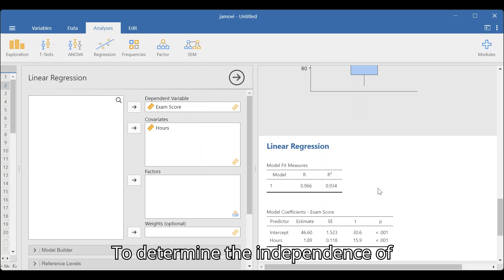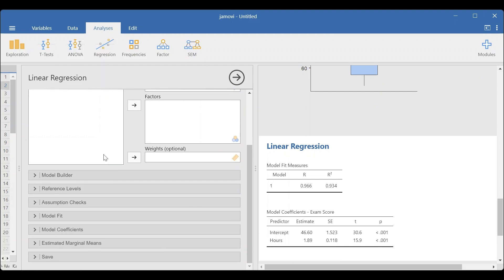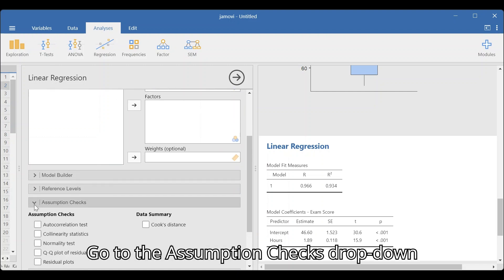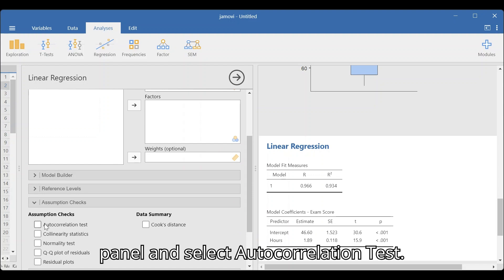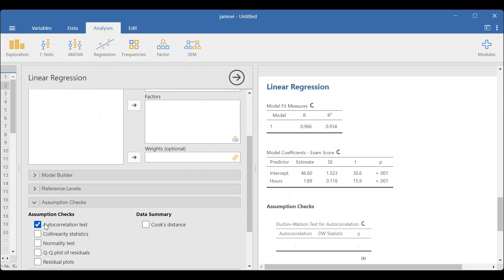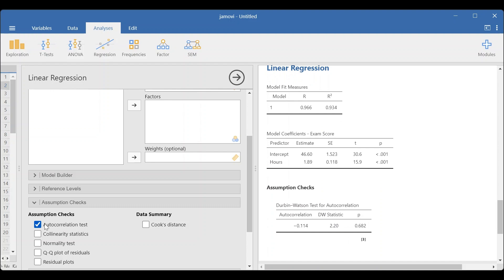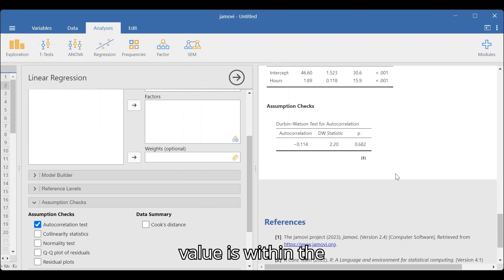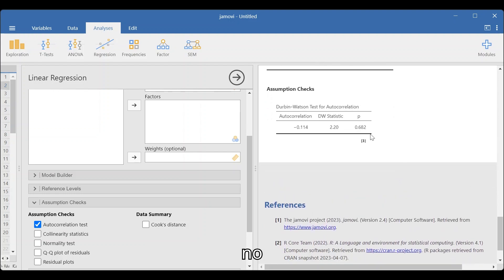To determine the independence of observations, the Durbin-Watson statistics will be used. Go to the Assumption Checks drop-down panel and select Autocorrelation Test. Since the DW value, 2.20, is within the acceptable range, 1.50 to 2.50, there is no first-order autocorrelation. The p-value of 0.658 also indicates that the null hypothesis stating that there is no autocorrelation will be retained.